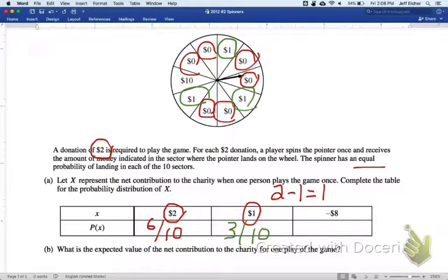And then lastly, if the charity is losing $8, that must mean you paid $2, and the charity had to pay you back $10, so that's negative 8 that the charity has given up. And there's only one way, 1 out of 10.